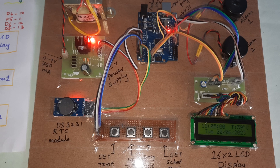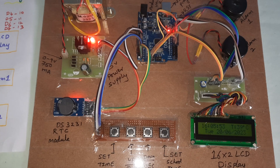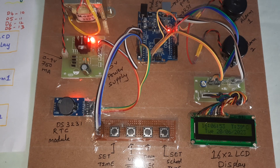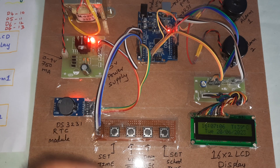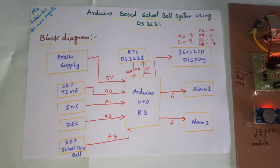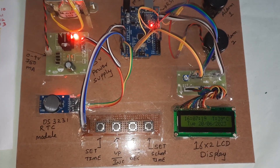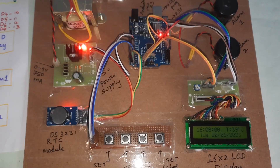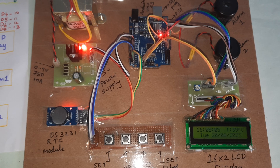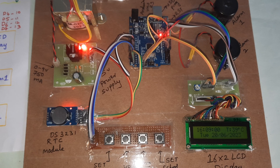4th bell firing. Now we are going for the 5th bell. 5th bell — now we are going for the 6th bell. Meanwhile it will come 7th bell and 8th bell also. This is the school bell system block diagram and this is the hardware unit. And the final bell — 8th bell. Thank you.